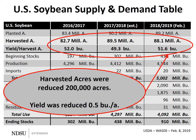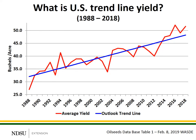The first values I'd like to focus in on are the revisions for harvested acreage and national average yield. Based on the Annual Crop Production Report, harvested acres for soybeans were reduced about 200,000 acres relative to the December forecast. The national average yield was also reduced about 0.5 bushels per acre relative to the December estimates. From a marketing perspective, the adjustment in the national average yield is more significant than the adjustment in harvested acreage — that percentage change is more important.